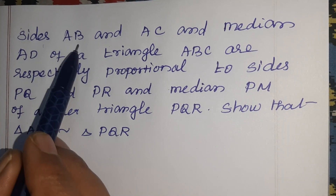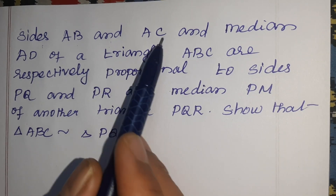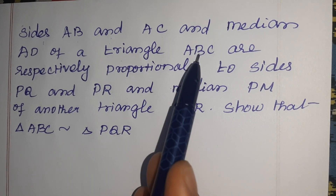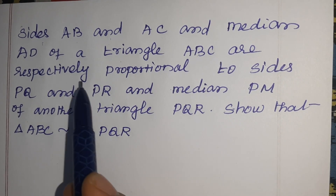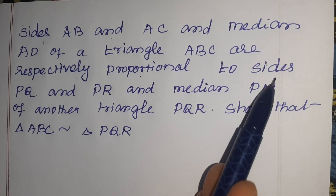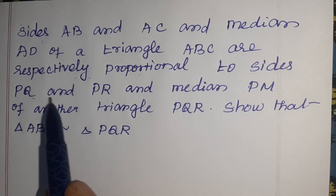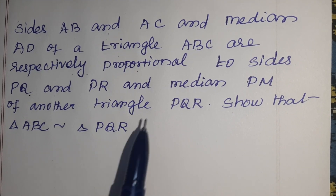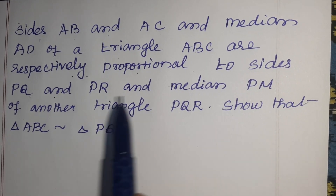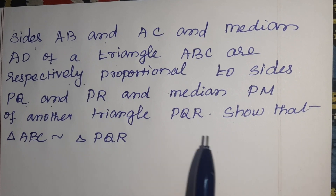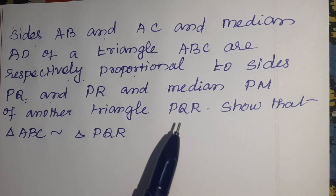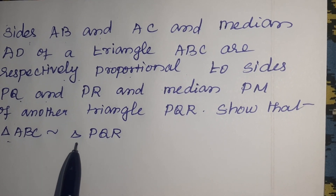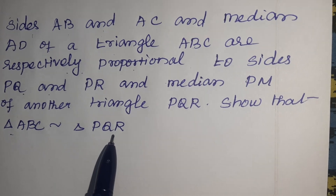Sides AB and AC and median AD of a triangle ABC are respectively proportional to sides PQ and PR and median PM of another triangle PQR. Show that triangle ABC is similar to triangle PQR.